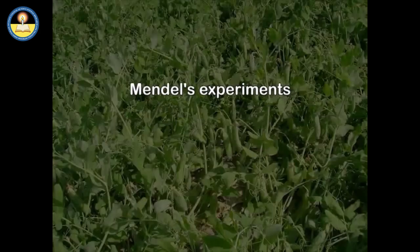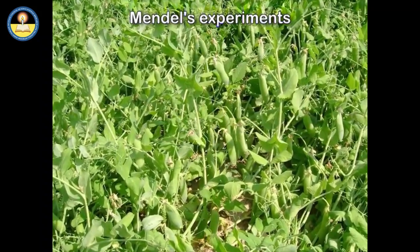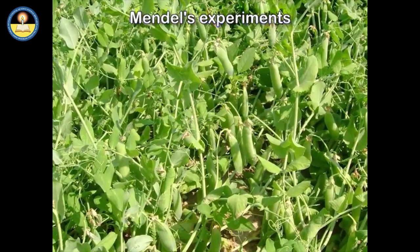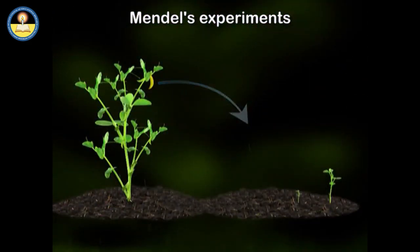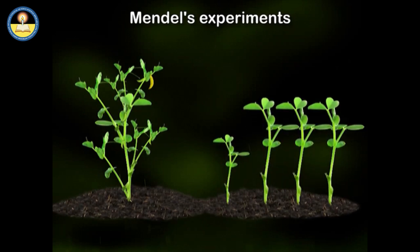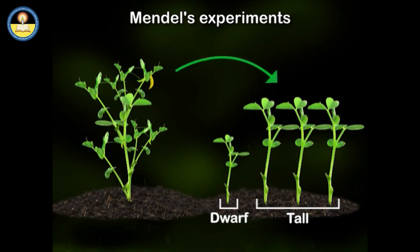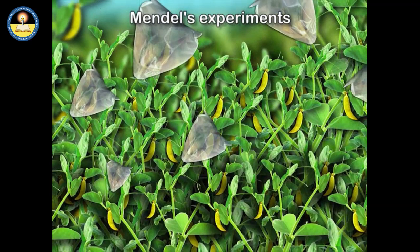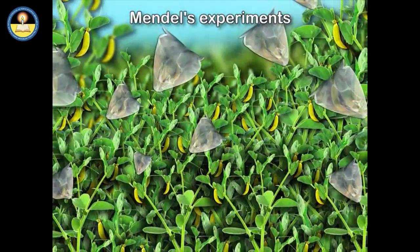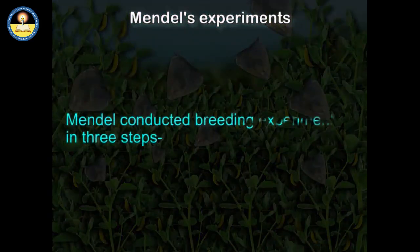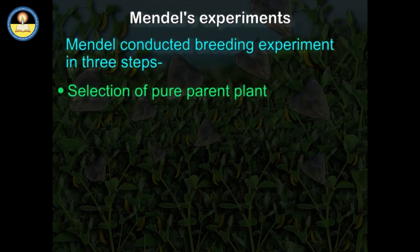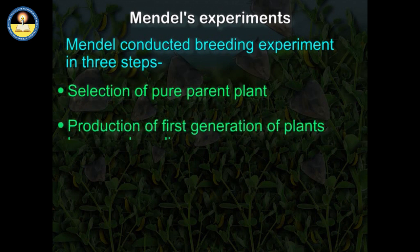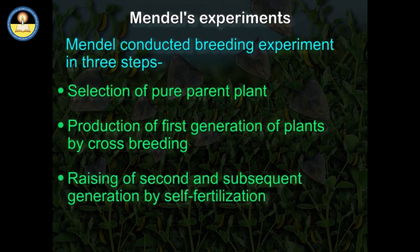Mendel's experiments involved crossing and testing a large quantity of selected plants. His aim was to examine how the plants' characteristics were passed on from one generation to the next. For 8 years, Mendel cultivated thousands of pea plants. Mendel conducted breeding experiments in 3 steps: selection of pure parent plants, production of the first generation of plants by cross-breeding, and raising of second and subsequent generations by self-fertilization.